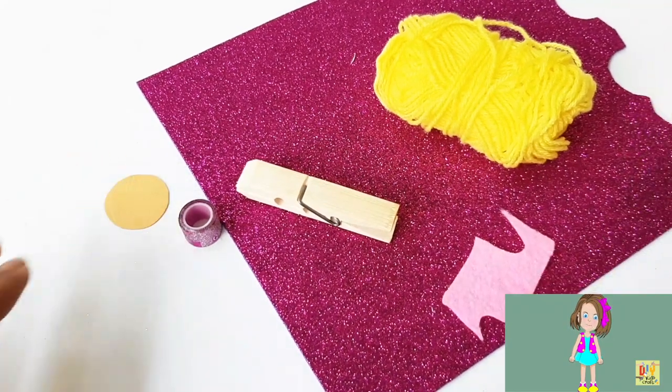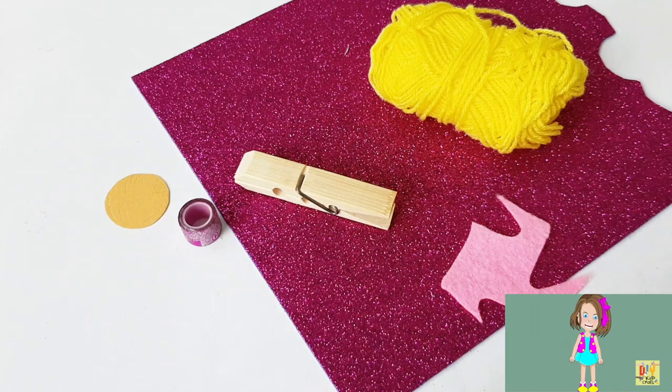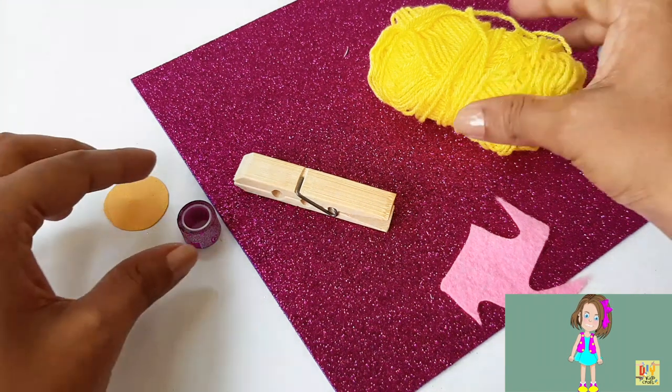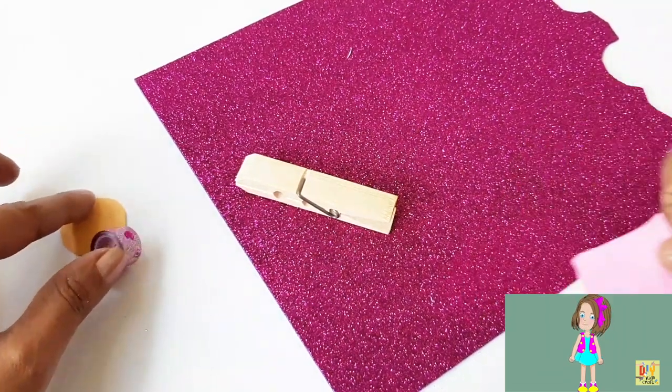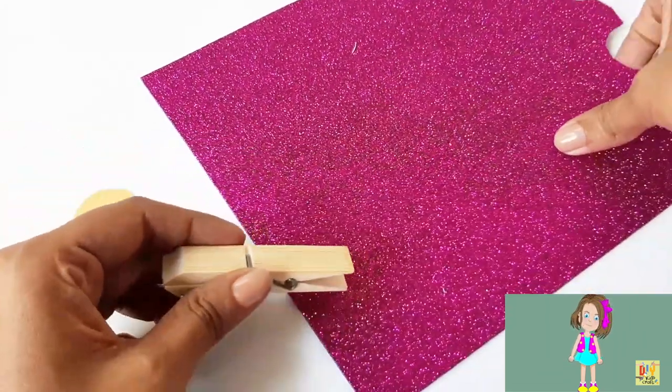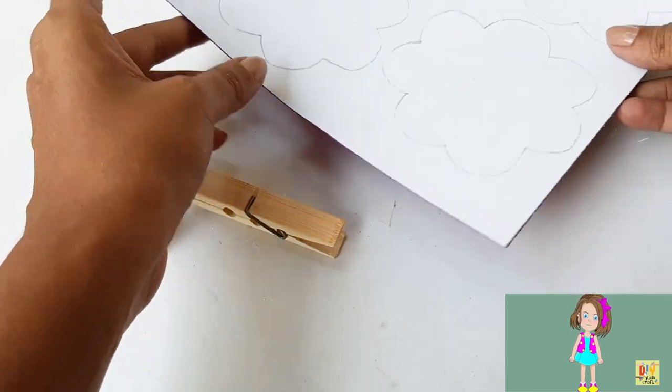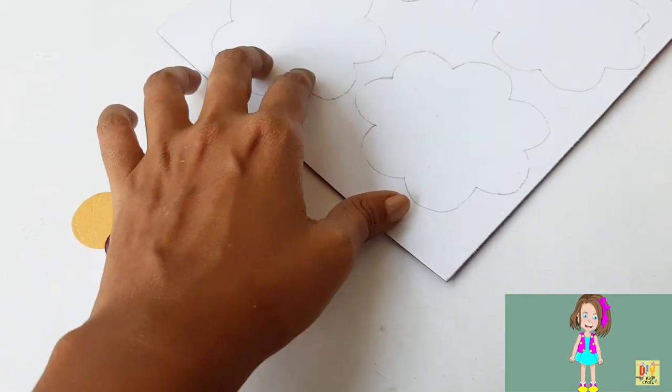Hi kids, it's me Sophie, and for today's video we're going to make two crafts. Let's start with this one, a mermaid using a clothespin. I have here a glitter foam sheet, and at the back we'll work on it.